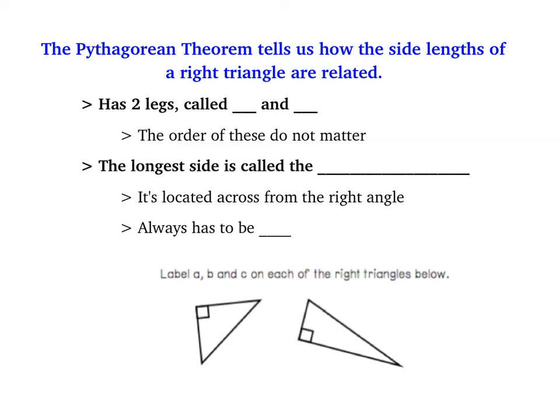A right triangle has two legs, which we always label as a and b. The order of a and b don't matter though, so it doesn't matter if you call one of them a and one of them b, the order doesn't matter.